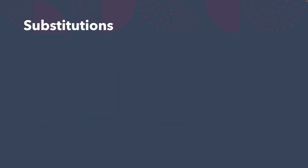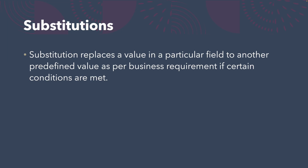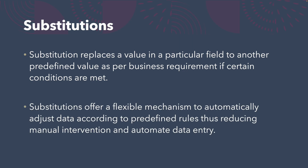Substitutions are a tool to replace a value in a particular field based on criteria you define in the system. Rather than giving an error or warning to the user, you are simply replacing the value with the required one. This ensures data integrity and ensures only allowed values are entered in a particular field. They offer a flexible mechanism to automatically adjust data — if the data entered is not correct, the system simply replaces it with the correct data.